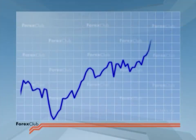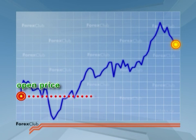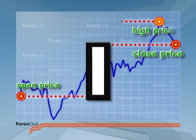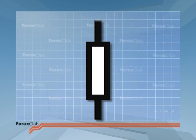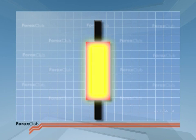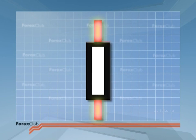The candlestick is basically a rectangle with the open price and the close price at either end. The high price and low price are attached to the rectangle with vertical lines. The rectangle is called the candlestick body or sometimes real body, and the vertical lines are known as the shadows, wicks, or hairs.